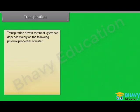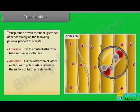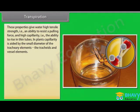The transpiration-driven ascent of xylem sap depends mainly on some physical properties of water: cohesion, adhesion, and surface tension. Cohesion is the mutual attraction between water molecules. Adhesion is the attraction of water molecules to polar surfaces such as the surface of tracheary elements. In surface tension, water molecules are attracted to each other in the liquid phase more than to water in the gas phase. These properties give water high tensile strength — the ability to resist a pulling force — and high capillarity — the ability to rise in thin tubes. In plants, capillarity is aided by the small diameter of the tracheary elements, the tracheids and vessel elements.